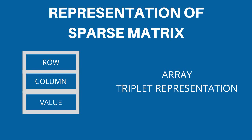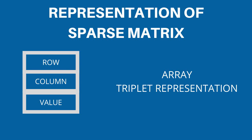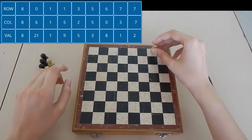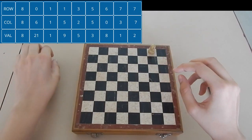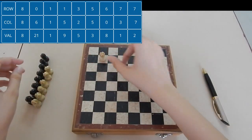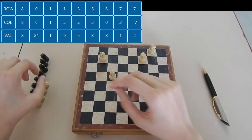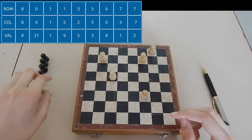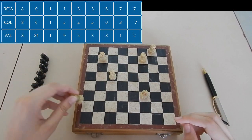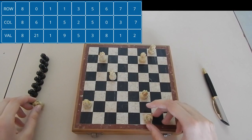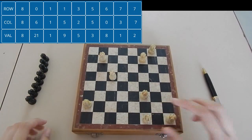Now, we will convert our two sample sparse matrices into triplet representation format. Row, column, and value: 0, 6, 21; 1, 1, 1; 1, 5, 9; 3, 2, 5; 5, 5, 3; 6, 0, 8; 7, 3, 1; 7, 7, 2.